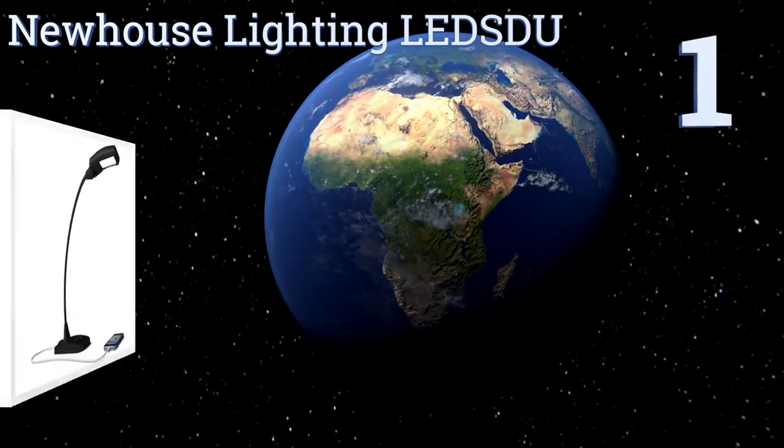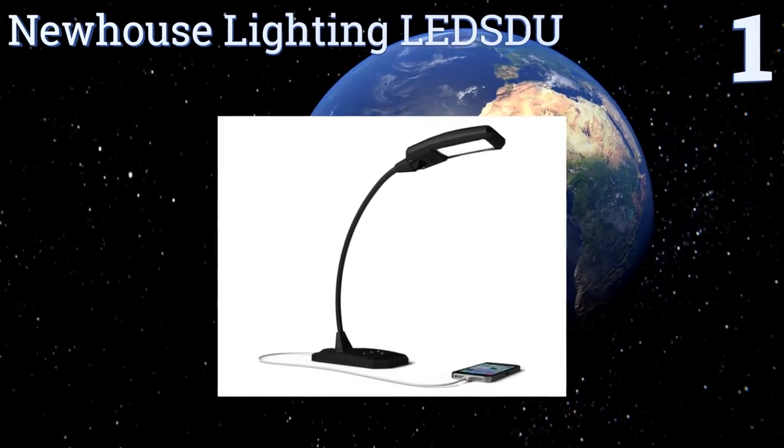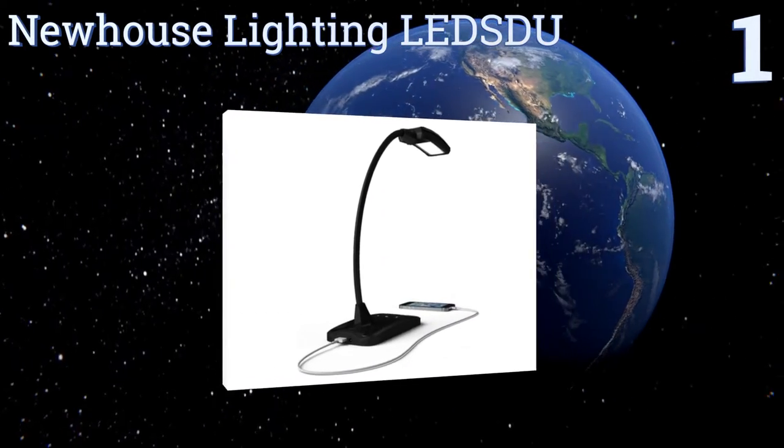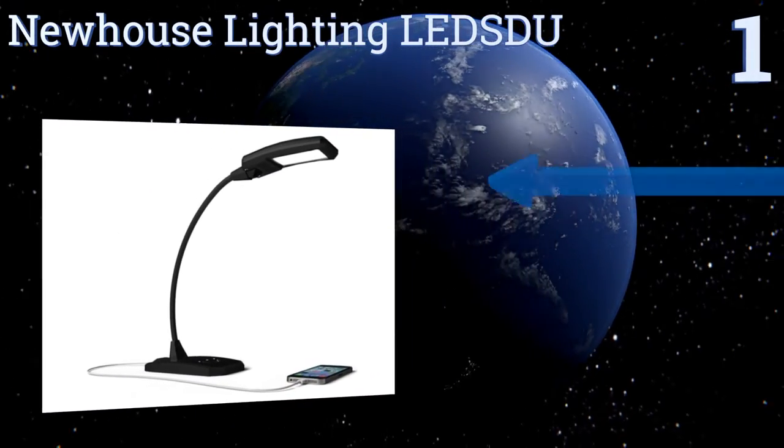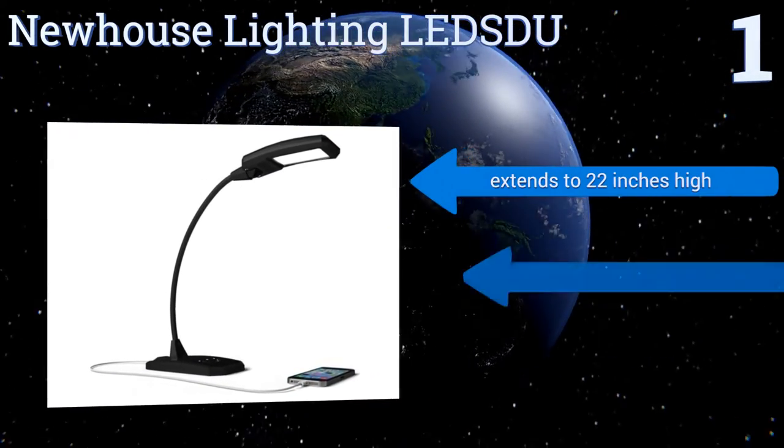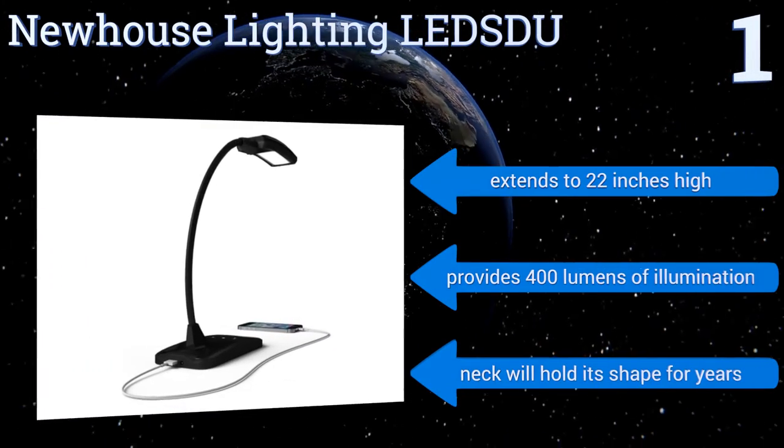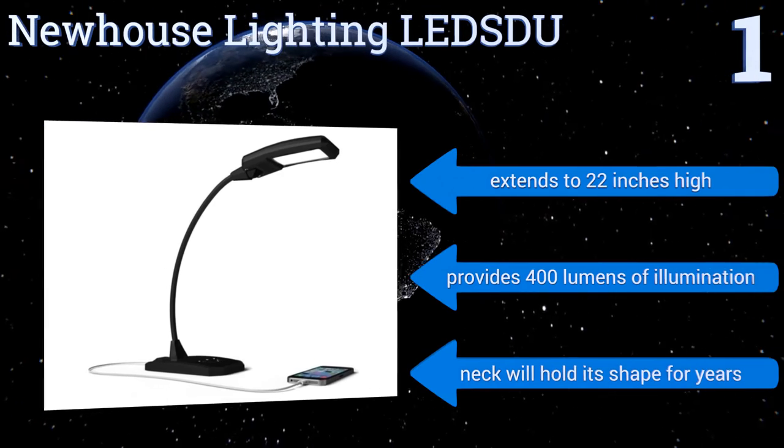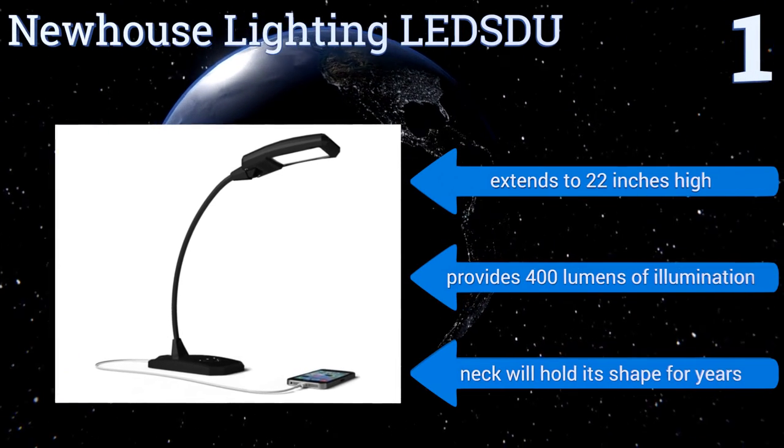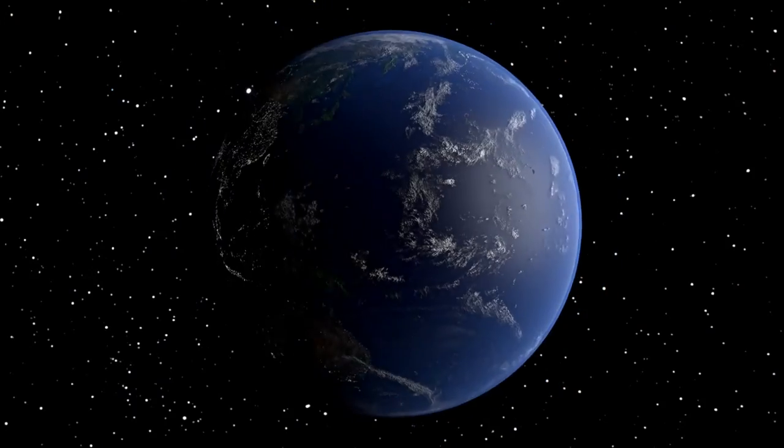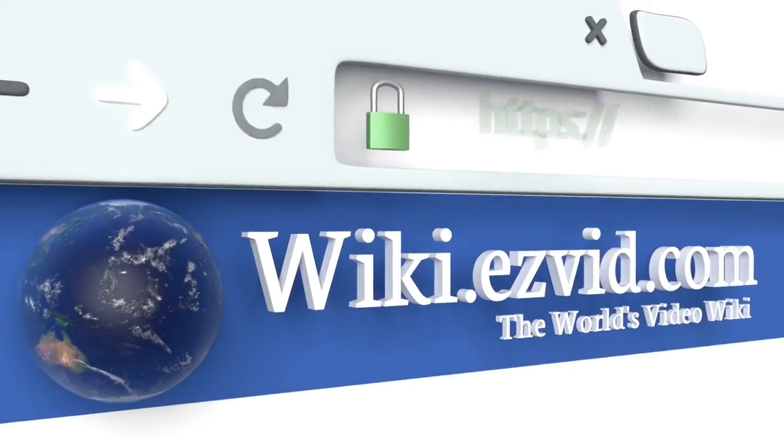And taking the top spot on our list, featuring a USB charging port for your smartphone or tablet and a touch-sensitive 5-level dimmer, the Newhouse Lighting LEDSDU is a premium choice. Plus, its memory function automatically restores your previous brightness setting after being turned off. It extends to 22 inches high and provides 400 lumens of illumination. Its neck will hold its shape for years. To see all of our choices, go to wiki.easyvid.com and search for flexible desk lamps, or click beneath this video.